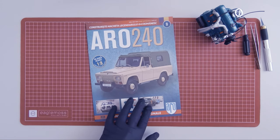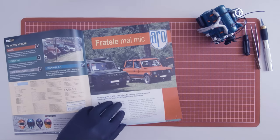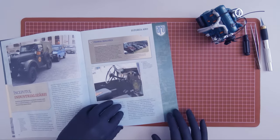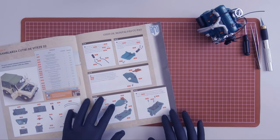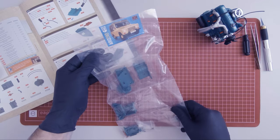In magazine 9 we start working on the gearbox of the vehicle. Here are the components.